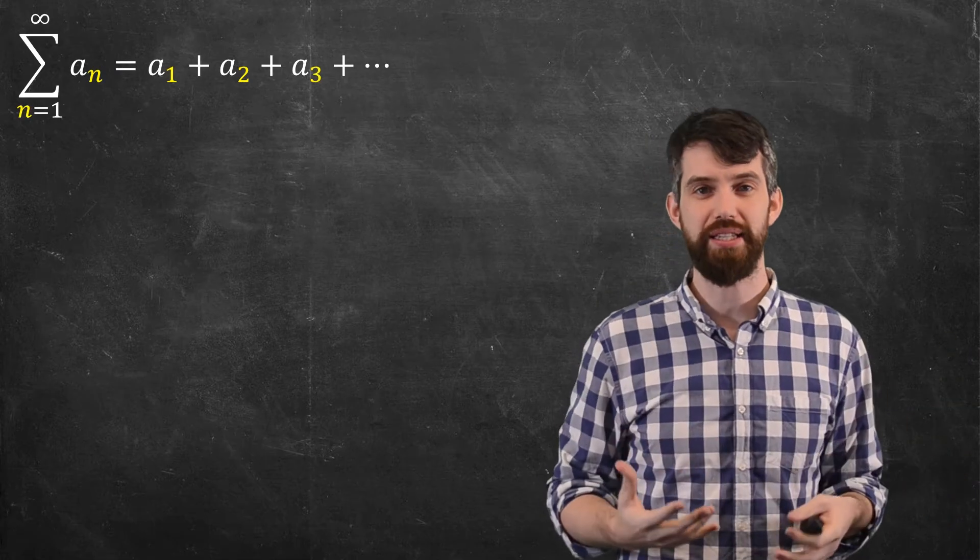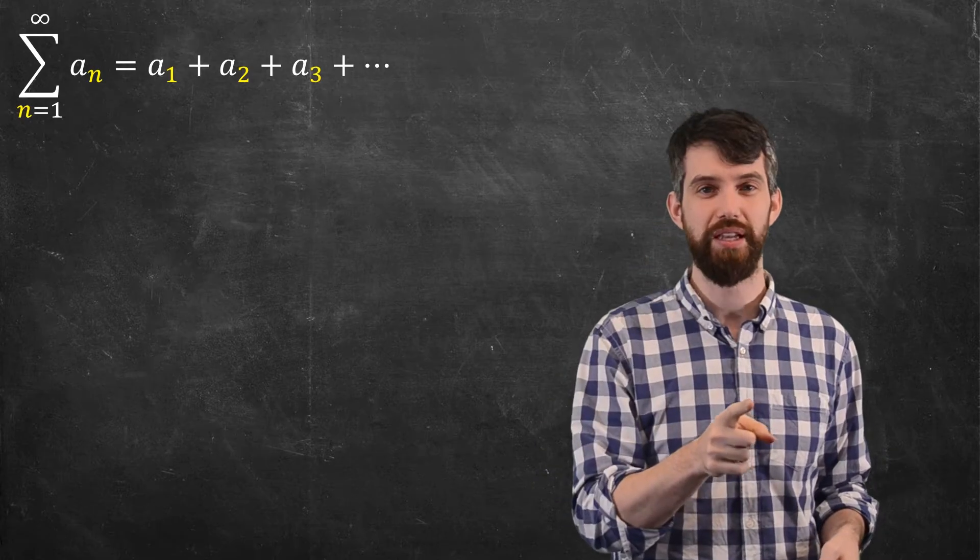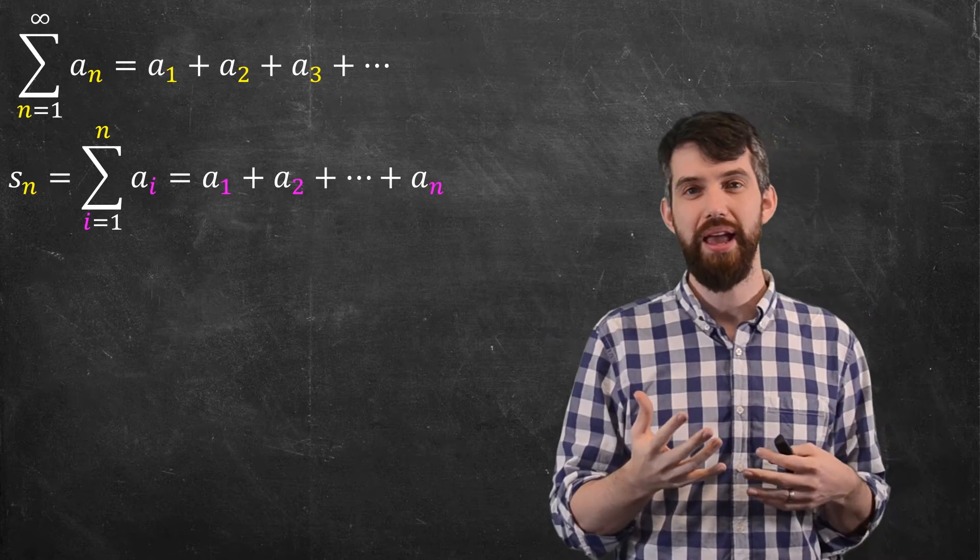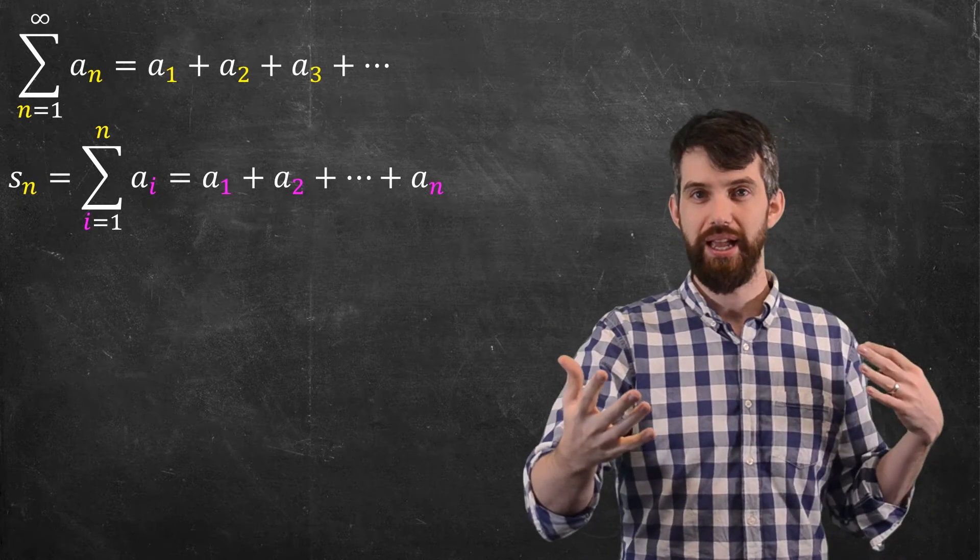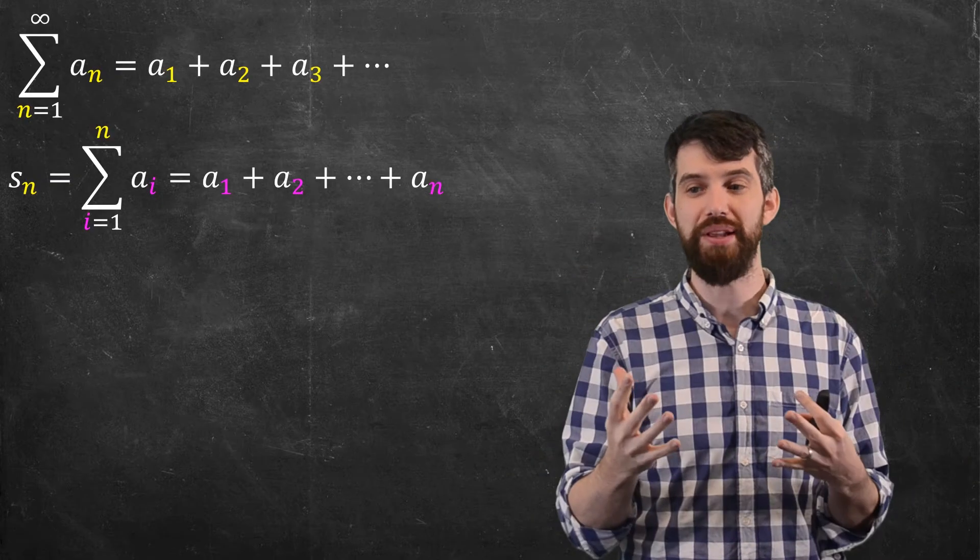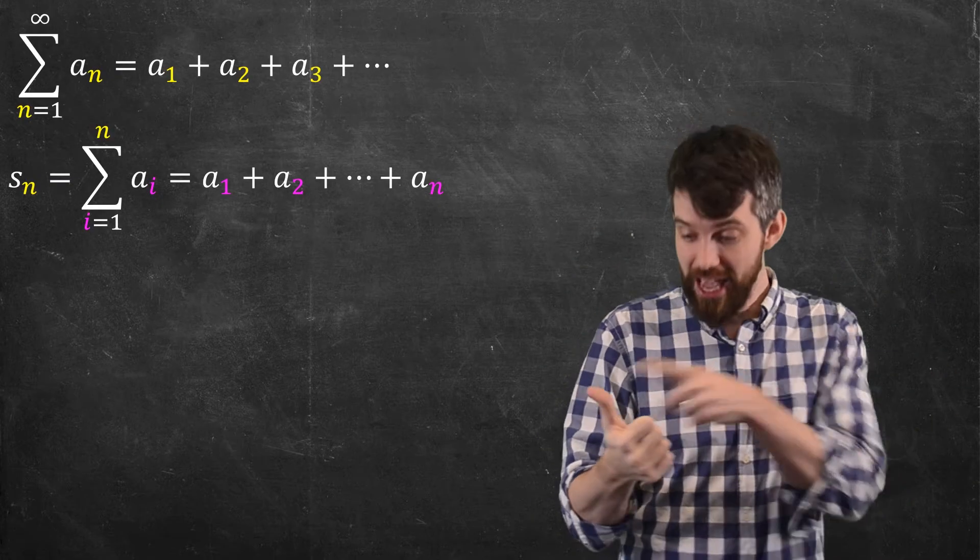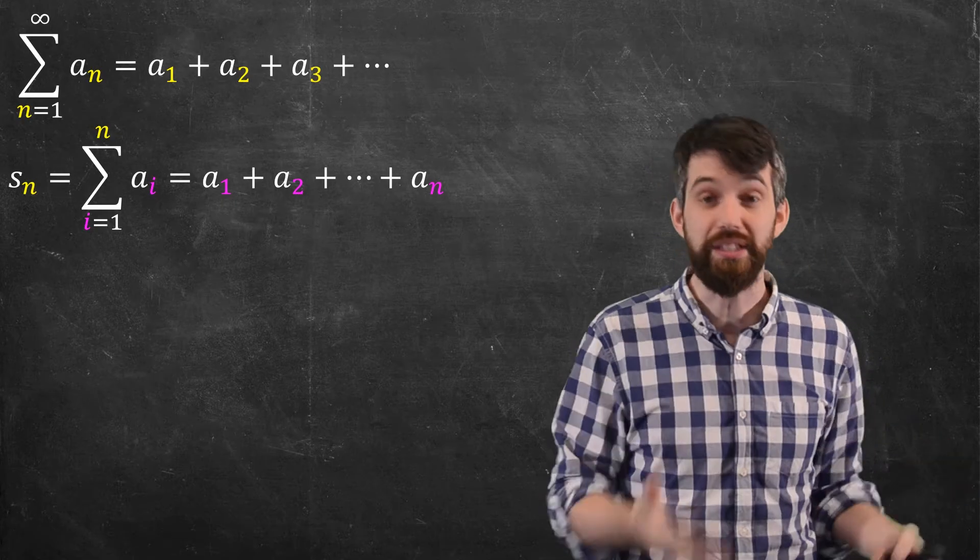Now, one of the things I can study is something called the partial sums of this. So, consider this sequence. This is the sequence s sub n, and s sub n is a bit different. It's not an infinite series. It is a finite sum. It only considers the first n terms. So, s sub n is a_1, a_2, a_3, all the way down to a sub n.